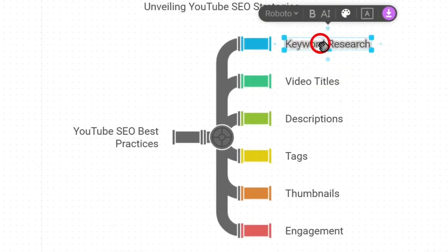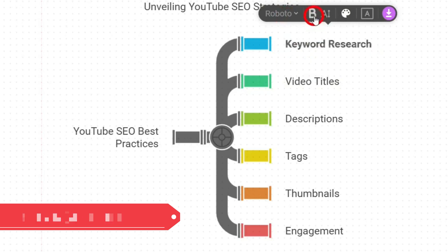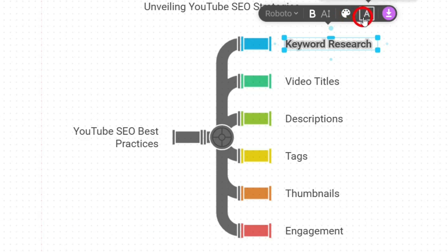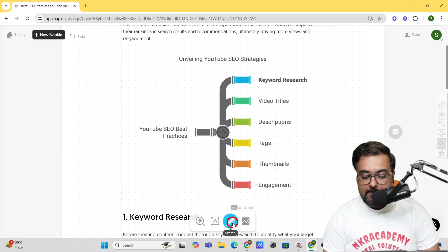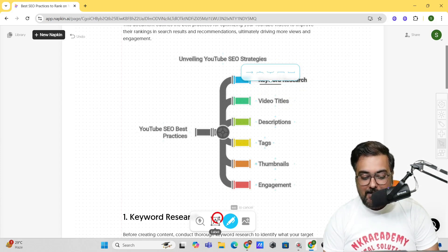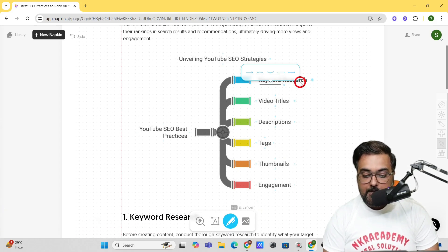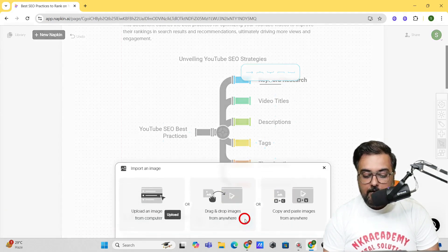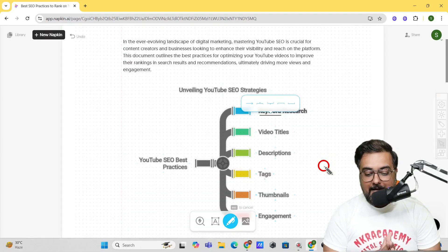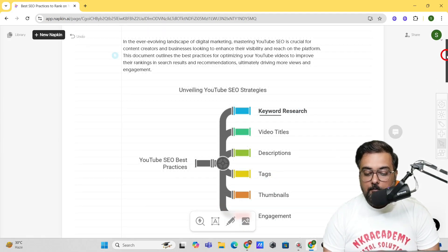It doesn't stop there — you can edit any and everything. Click on a part and you can write whatever you wish, make text bold, change fonts, change colors, add different shapes and arrows. You can use the sketch marker to mark things. You can add labels, and if you want to add images — say for 'keyword research' — you can click and upload an image or drag and drop from anywhere. The opportunities are endless.